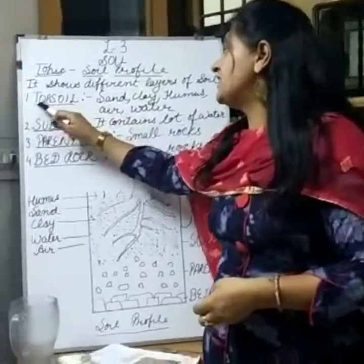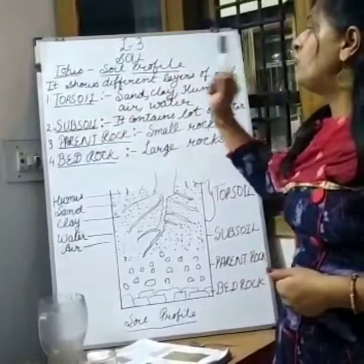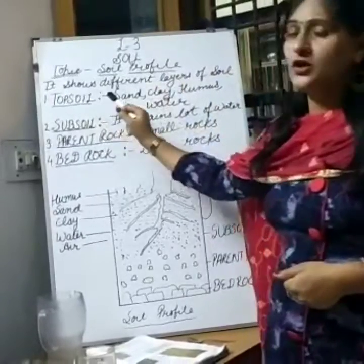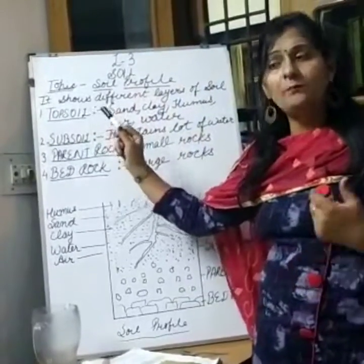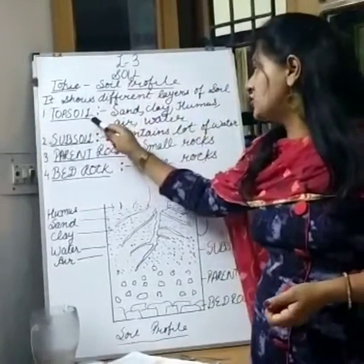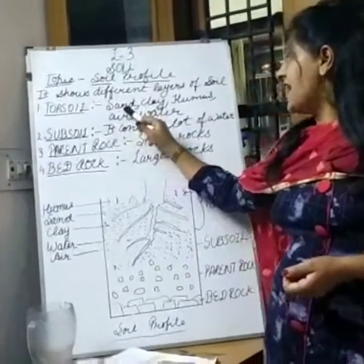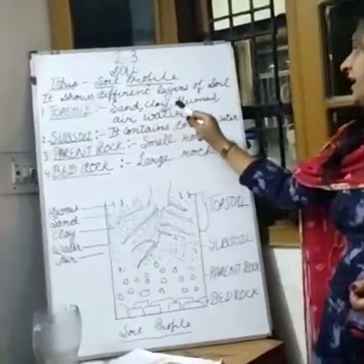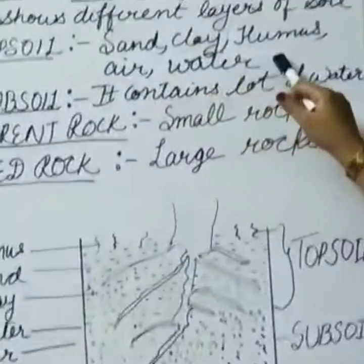The first layer is topsoil. What is topsoil? Topsoil is the topmost layer of soil. It contains sand, clay, humus, air, and water.